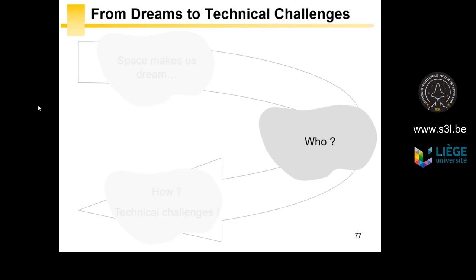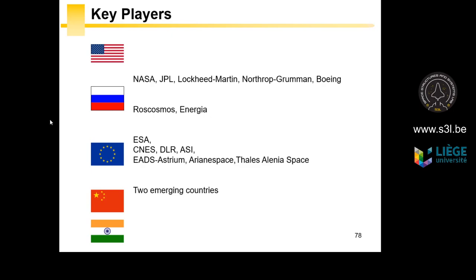Who is involved in space activities? There are two major key players: Russia and America. Companies include NASA, JPL (Jet Propulsion Laboratory) — designers of American probes — Lockheed Martin (also known for the F-35), Northrop Grumman, and Boeing. Russia has Roscosmos for satellites and Energia for rockets. The third key player is Europe — you may know CNES in France, DLR in Germany, ASI in Italy, EADS, and Arianespace.